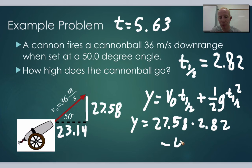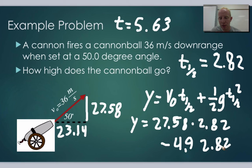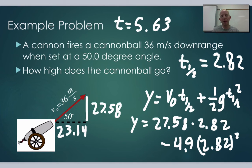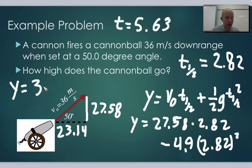So the calculation is: y equals 27.58 times 2.82, minus 4.9 times 2.82 squared. Working that out gives us a total maximum height of 38.81 meters at the very top of the trajectory. It's amazing how much we can figure out from simple mathematics.